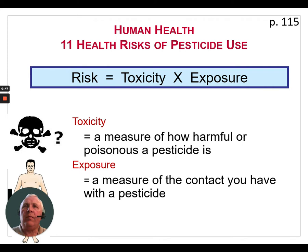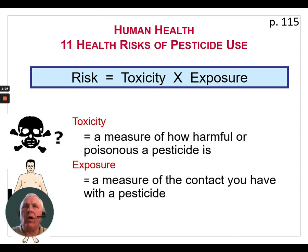If we're working with a very highly toxic pesticide and we do all the things we're supposed to do according to the label — wearing personal protective equipment, working under proper safe conditions — and our exposure is very low, we would therefore have low risk. However, the opposite is also true. If we're working with a pesticide that is not very toxic, but we're careless and don't wear our personal protective equipment, and our exposure is extremely high, we could actually have a higher risk. So always remember: toxicity times exposure equals the risk you have when working with a pesticide.